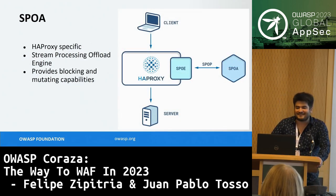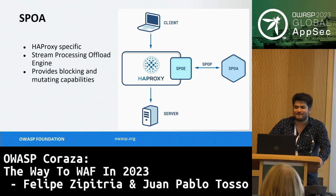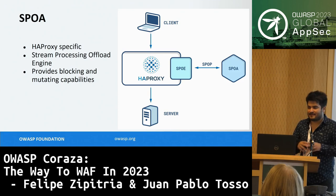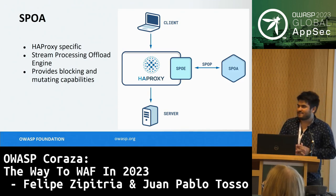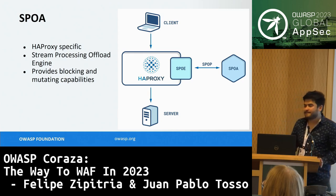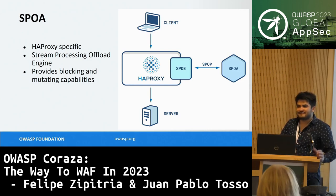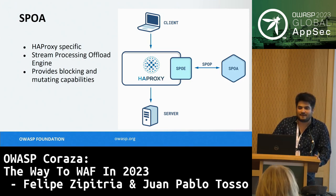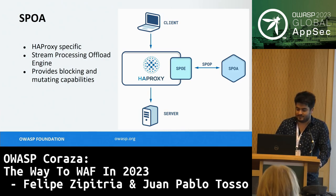SPOA is an interesting one — in Coraza we released an SPOA connector for HAProxy as an experiment, but so many people started using it. SPOA provides a protocol of communication between HAProxy and an application: from the HAProxy side you send data like the request body, URL, and headers to the web application firewall, and SPOA can return a map of objects you can use to take decisions. For example, you can create an if-statement in HAProxy that says: if the WAF disruptive action was deny, let's deny the connection. This can be used for termination or many other features.